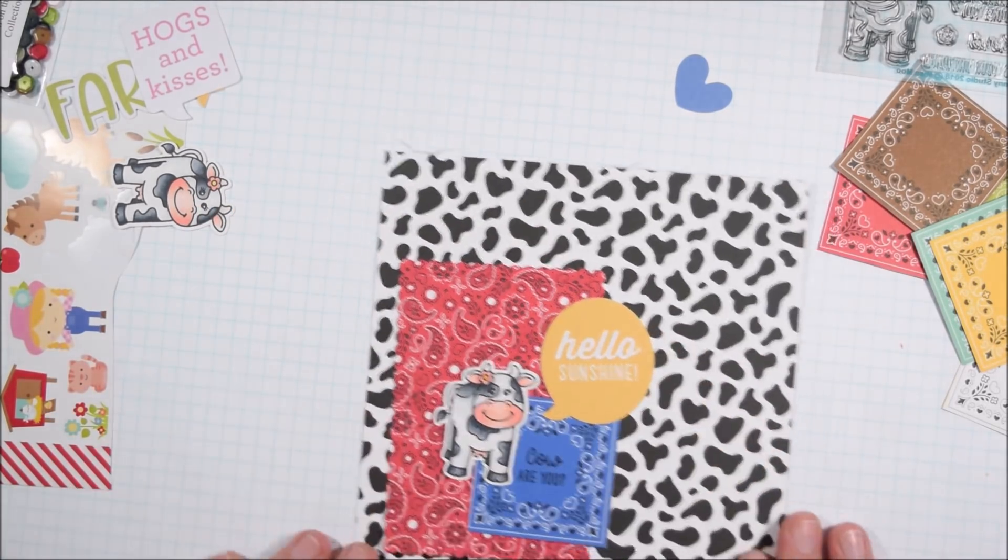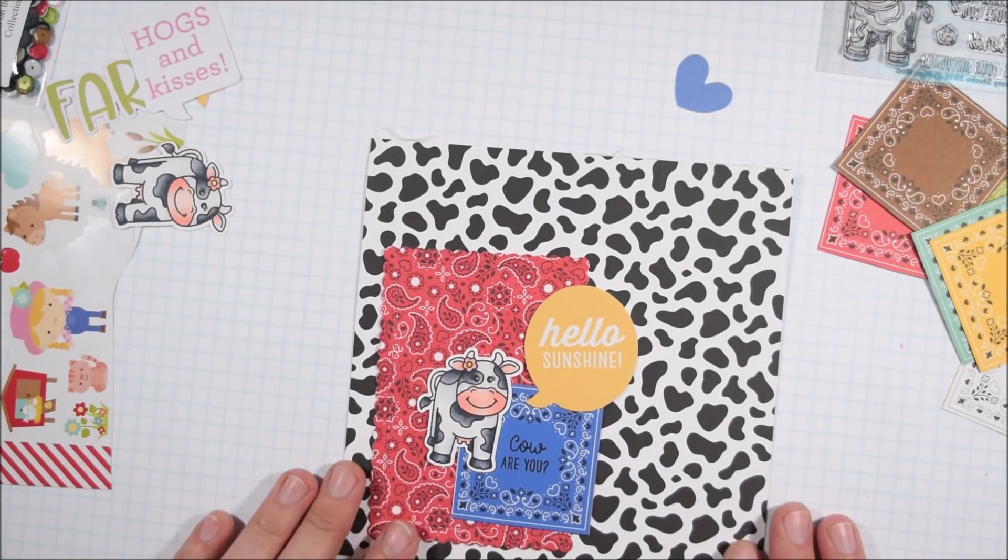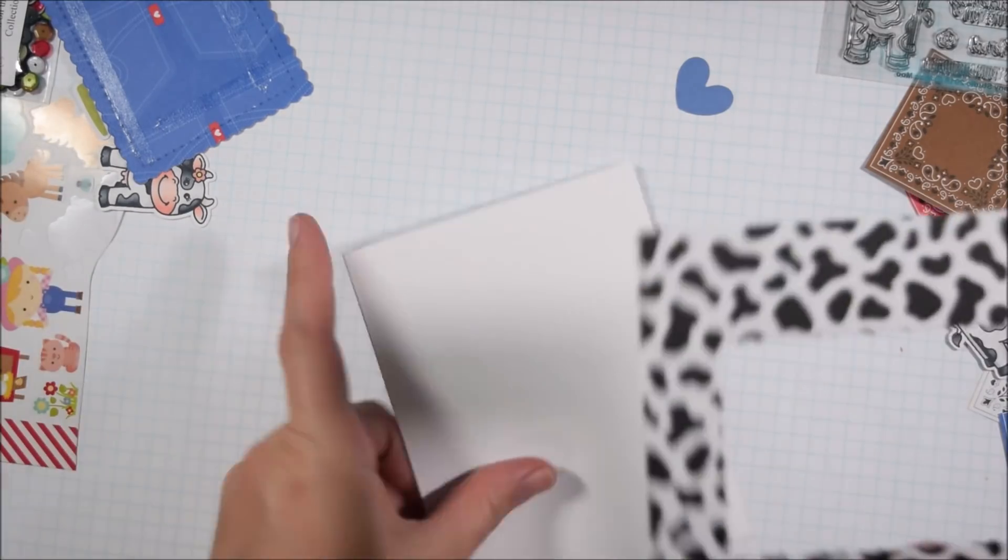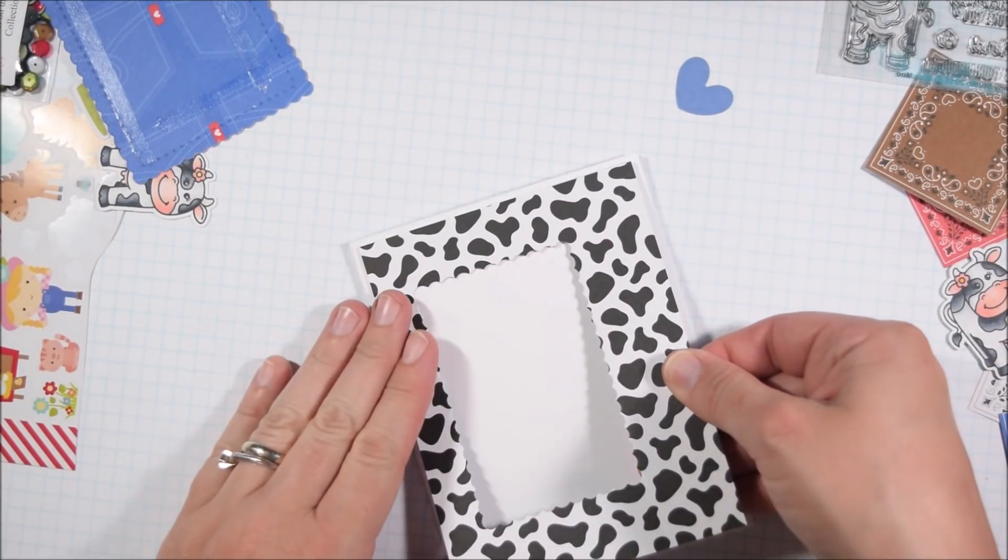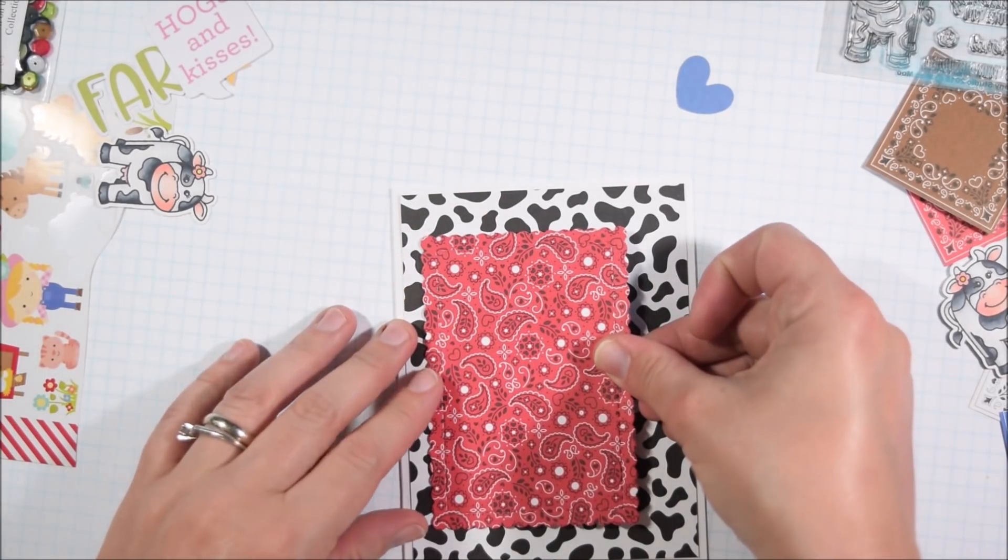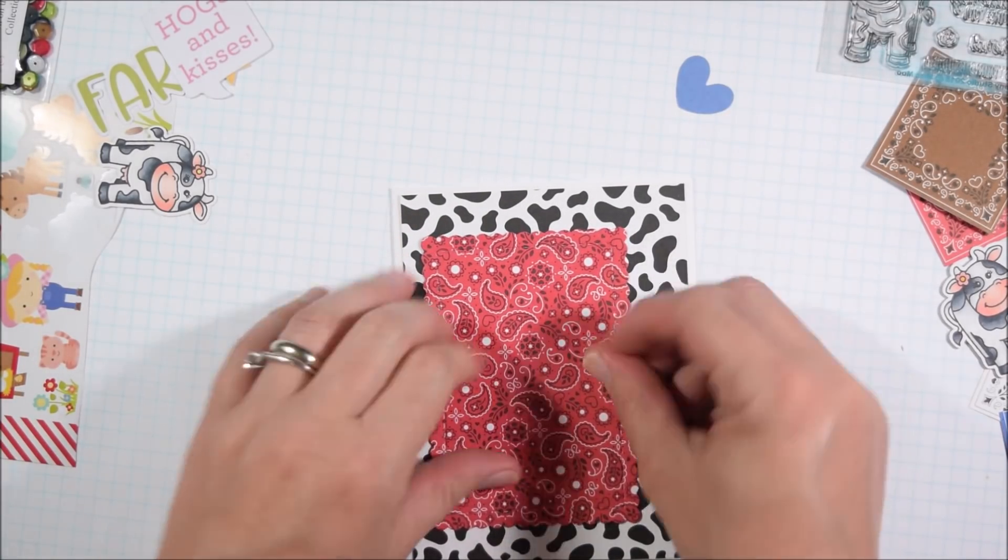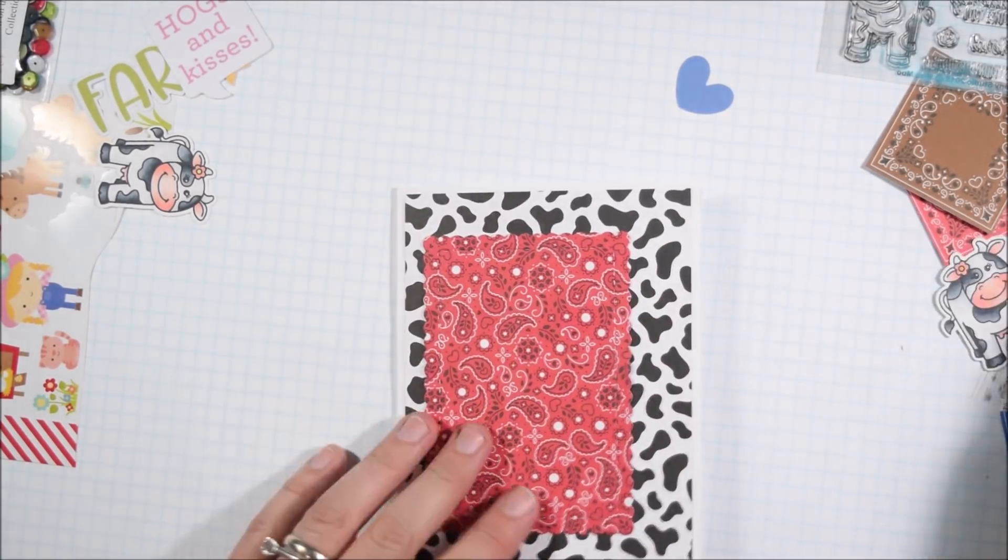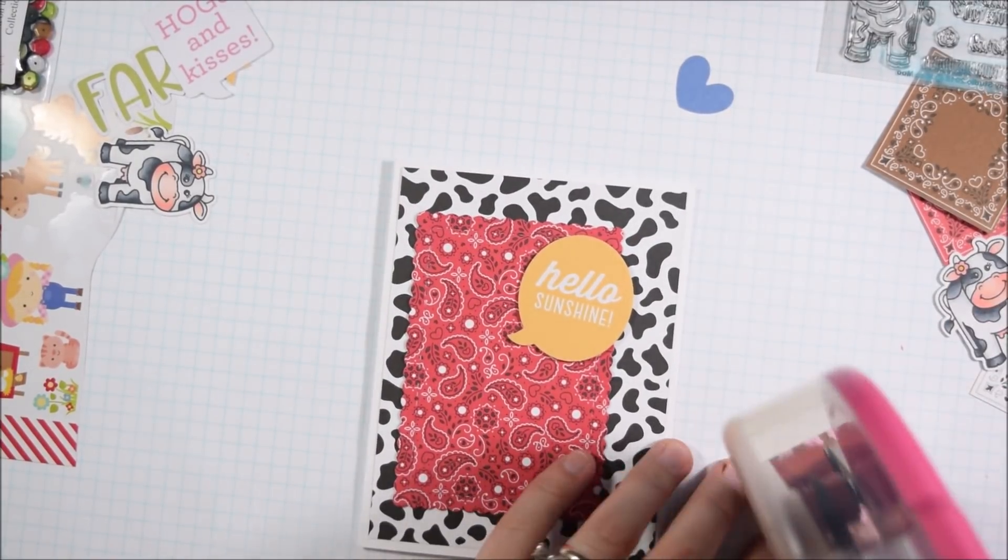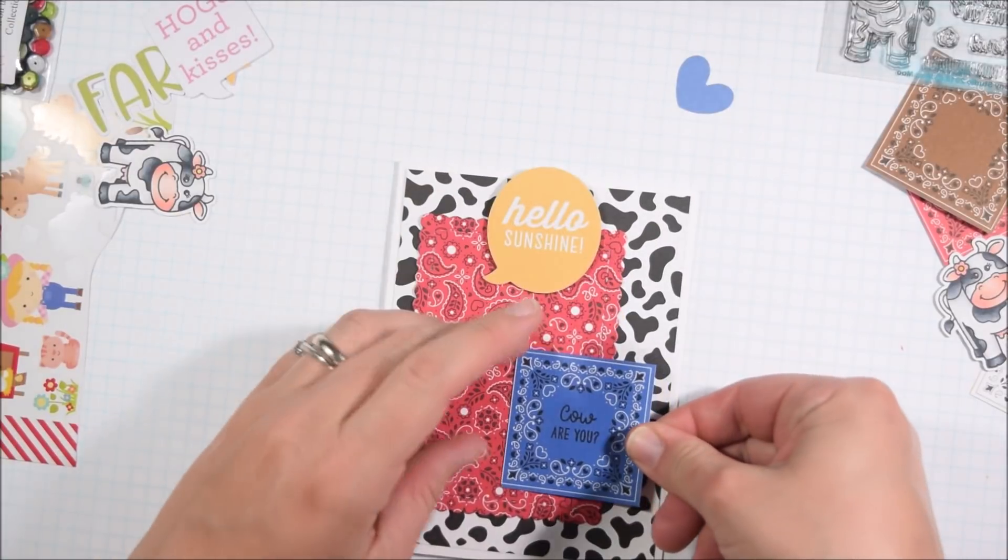So for this card, I decided to use the cow are you sentiment from the stamp set, and I had to cut it out to make it work. And then I started pairing it up. I thought that the blue paper with the cows on it was a little too busy, but the cow print itself, the black and white cow print, worked out pretty well. Again, I cut a smaller rectangle out of the background paper so that I could have it for another card.